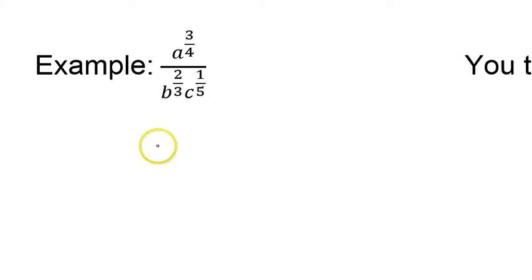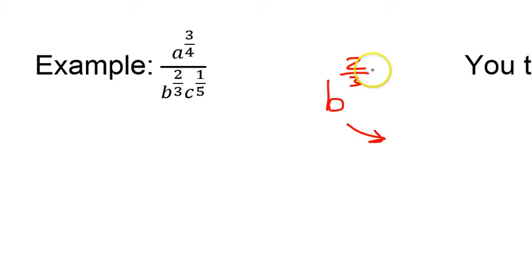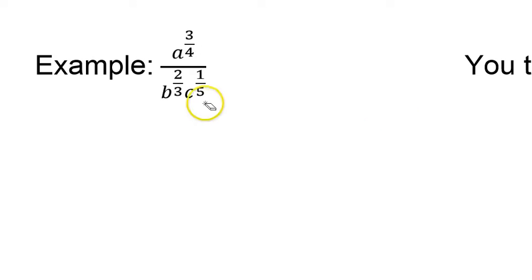In this video, we will learn how to rationalize the denominator when we have fractional exponents like this. Rationalizing the denominator has to do with removing all radicals from the denominator. For example, b to the 2/3 power is the same as the cube root of b squared — so there is a radical in there. Mathematicians have agreed that it is sometimes helpful to get rid of all radicals from the denominator. So how do we do that when we have exponents that are fractions?